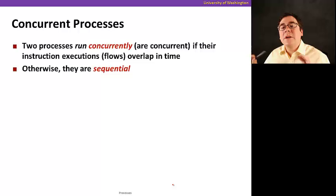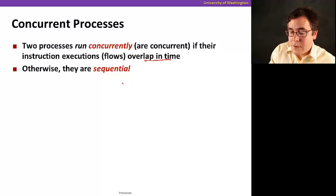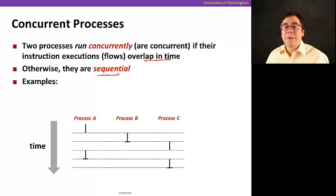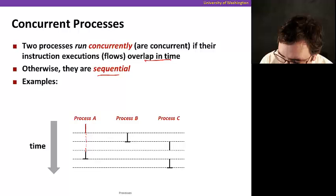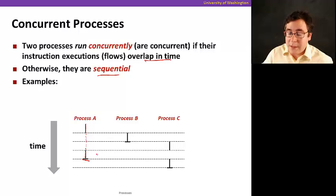So, processes can be concurrent. And it means that if they run concurrently, if the instruction flows overlap in time, otherwise they are sequential. So let me give you an example. Suppose that I have process A here, process A is running, having control of the CPU, and then it's paused for a second, and then it continues running and ends here.